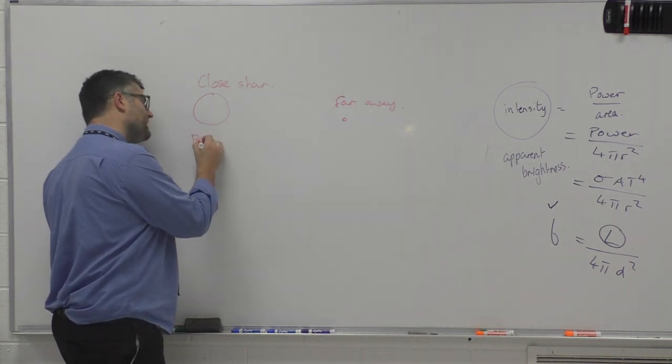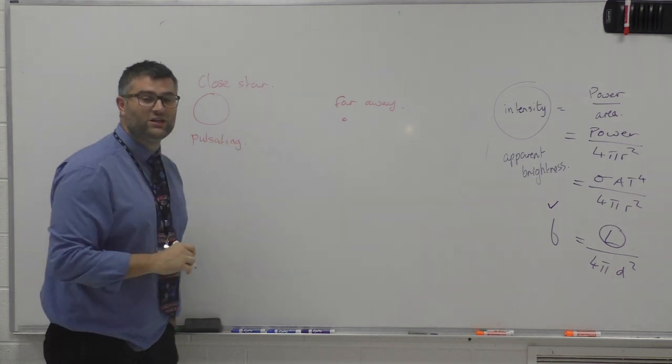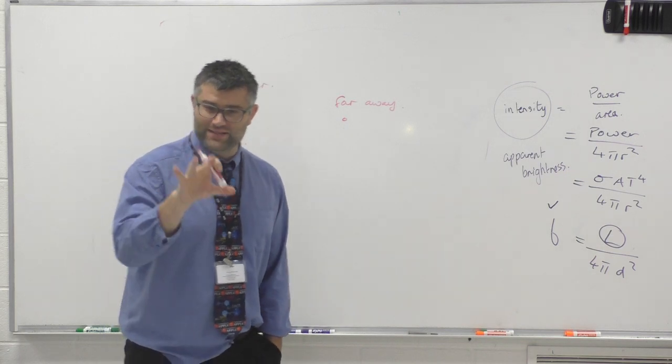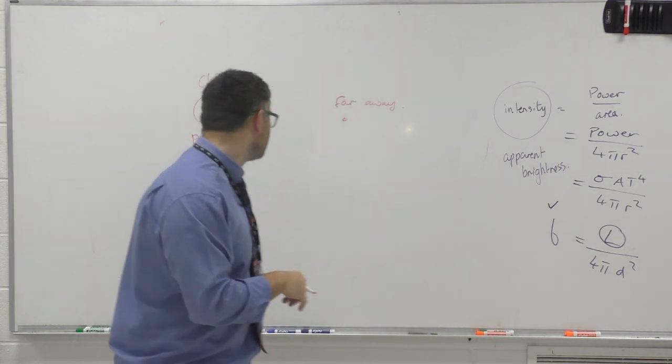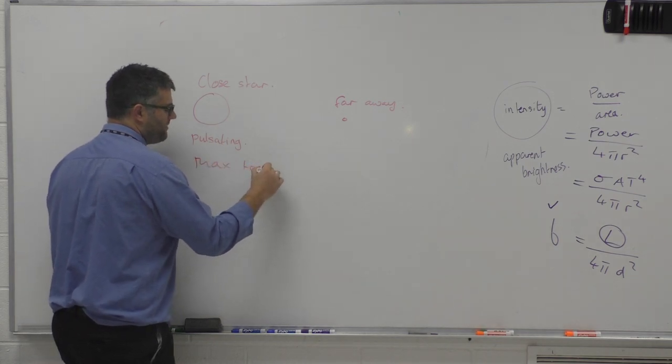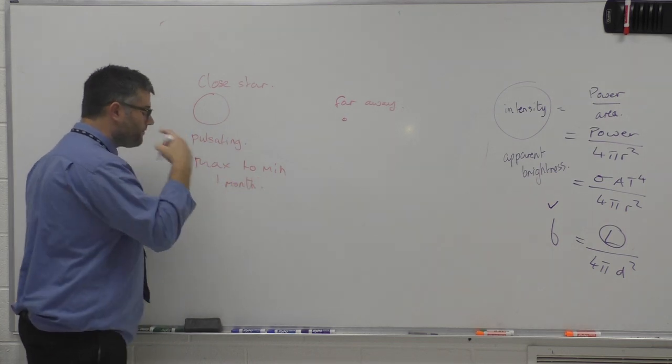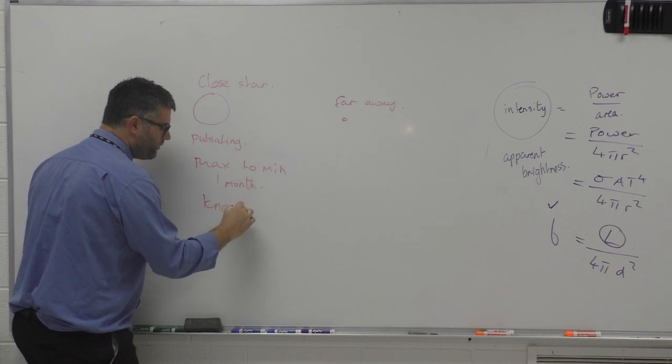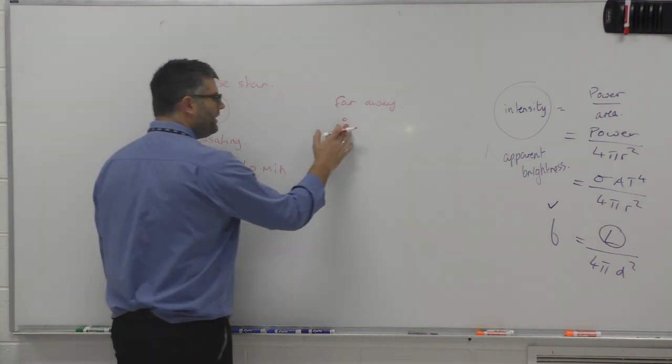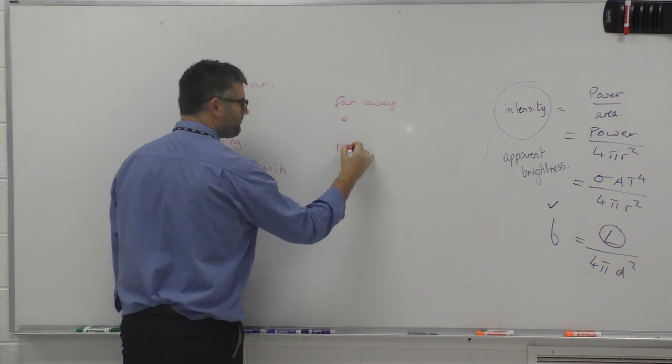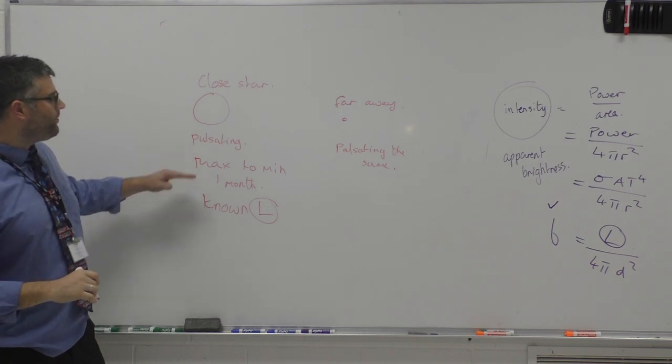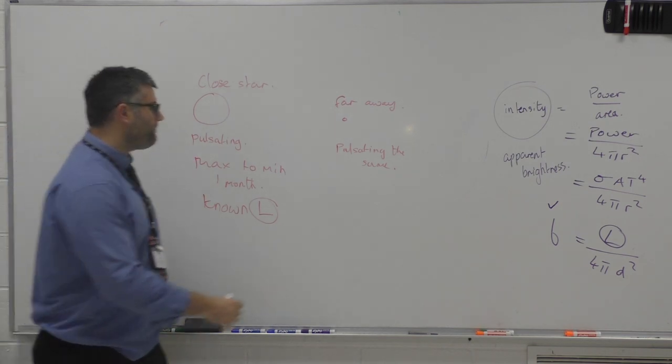Now, the thing is that its pulsating is actually directly linked to its intrinsic luminosity. So the rate at which this star pulsates indicates that it has a very specific luminosity. So the pulsating, say it's pulsating once, goes from max to minimum, max to min in, say, one month. And we know the luminosity, we have a known luminosity because it's a really close star and we can tell everything about it. When we look at this star that's pulsating, it's pulsating the same, and what we've observed is this actual pulsation is the same rate, it happens once a month.